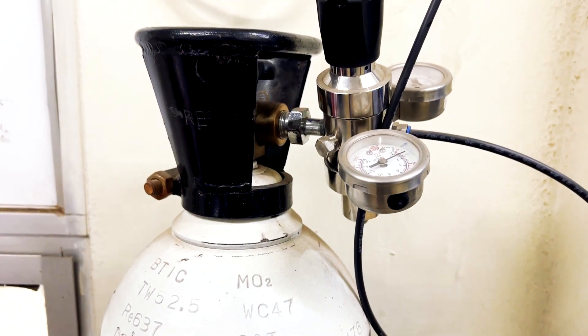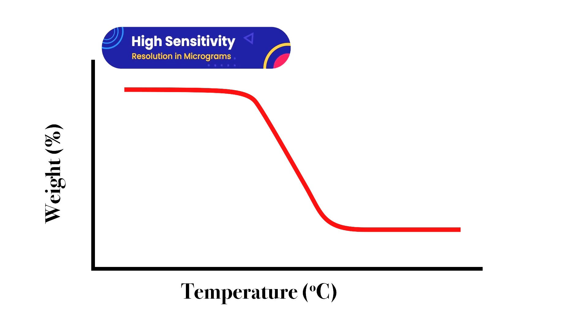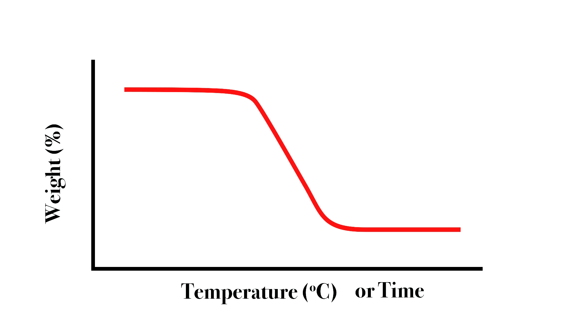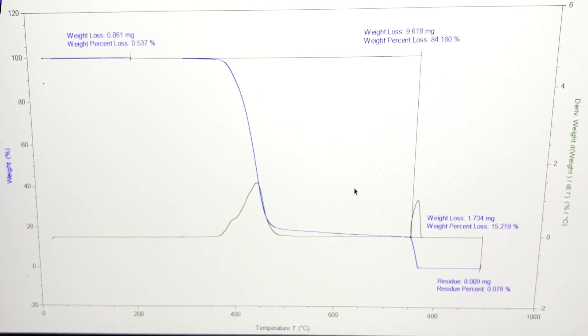The TGA also has a provision for controlled gas delivery where we can choose either oxygen, nitrogen, air, or any other specific gas that is used for control studies. And finally, no system is complete without the software. In this case, the software records the weight, which is in the order of micrograms, as a function of temperature as well as time. The software is also capable of displaying the results in the form of graphs for easy visualization.